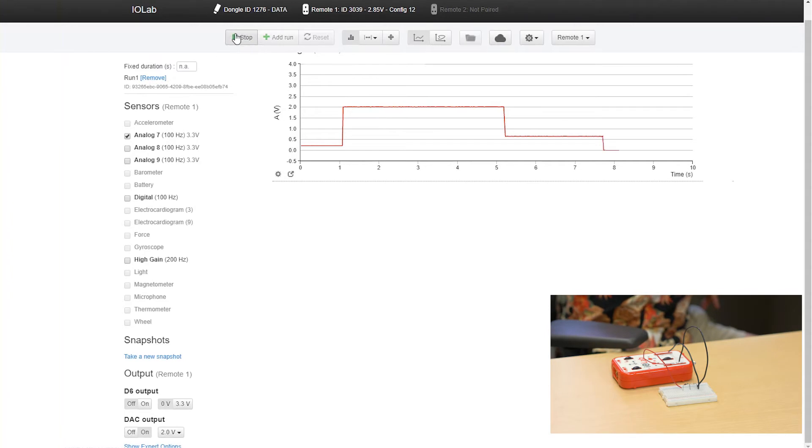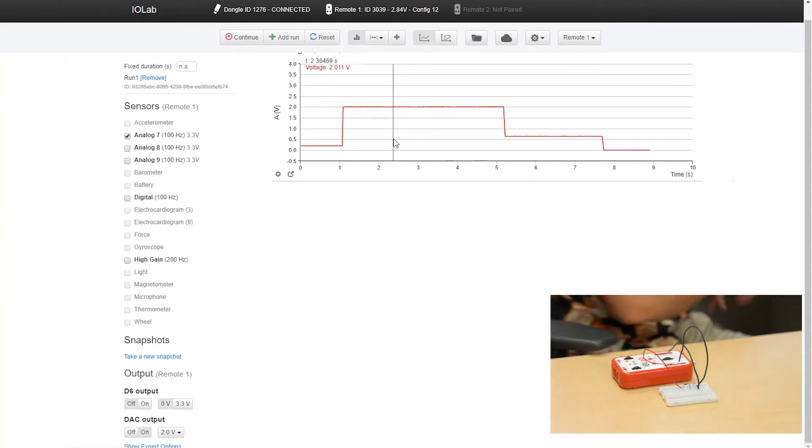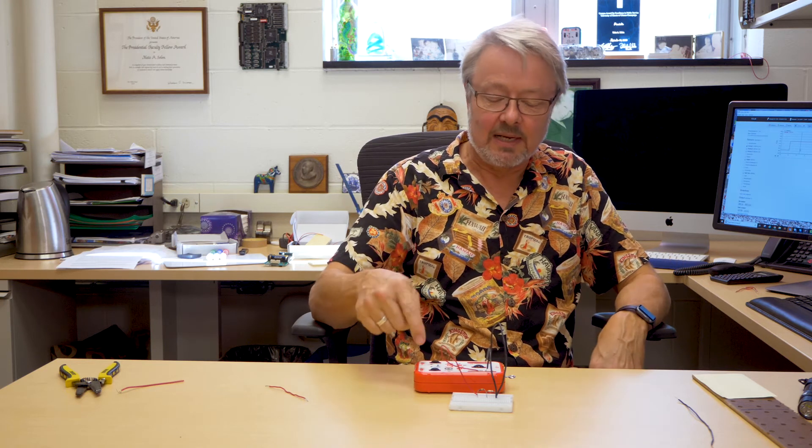Then the students can use this to study the circuit. It's a resistive divider, they can see that the voltage is scaled the way they should, they can figure out the currents in these, and they see that the currents are the same, and so on. That's a nice electricity and magnetism experiment.